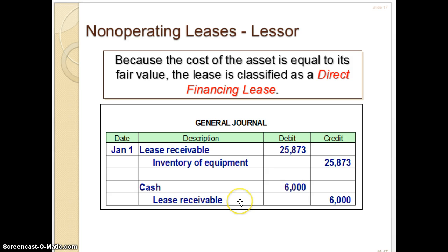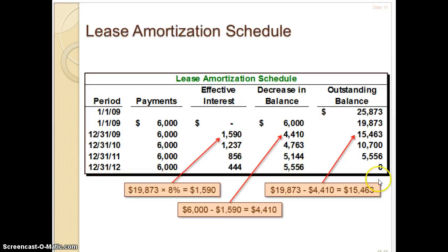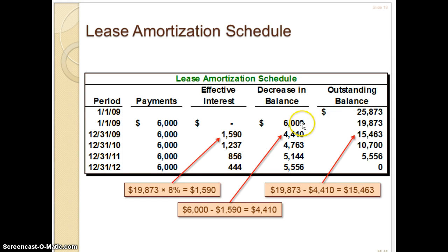They get their cash and have the lease receivable with no interest — same as the flip side, the lessee's journal entry. Looking at the amortization table: the outstanding balance is $25,873. This is January 1st, 2009, the inception. There's the first payment of $6,000 on January 1st, 2009. You take this right off the top with no interest: $25,873 less $6,000 gives you $19,873.